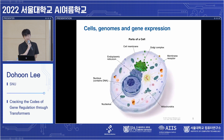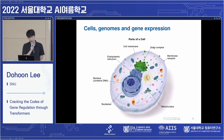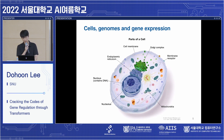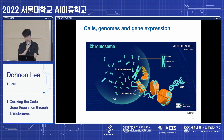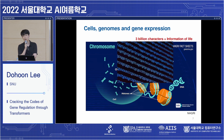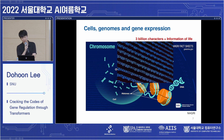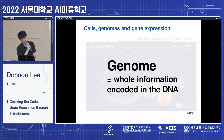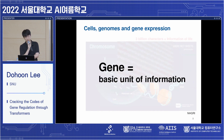Cells are the basic units of life, and all the organs and tissues are made up of cells. Inside the cells, there's a compartment named nucleus, and inside the nucleus we have DNA. DNA can be represented as a string of 3 billion characters consisting of A, C, G, and T. DNA encodes the information of life. The whole information encoded in the DNA is called the genome, and the unit of information is called a gene.